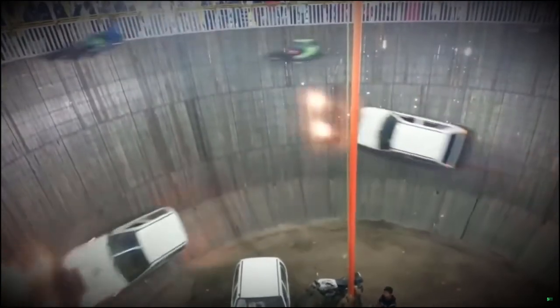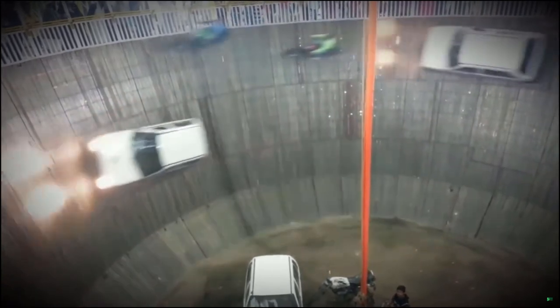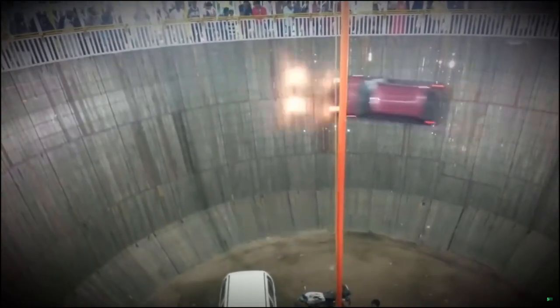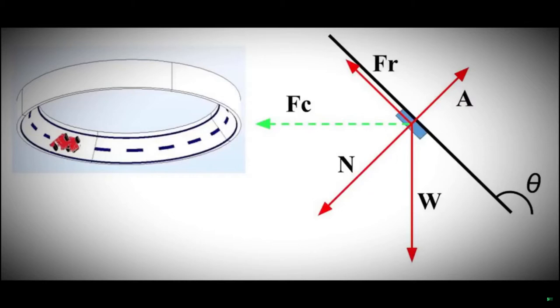Consider one of those walls of death where the cars circulate vertically held by the friction between the tires and the wall. Now we will show a physical system similar to a wall of death but for inclinations well over 90 degrees, which we will call an inverted track.